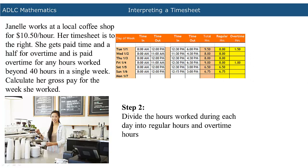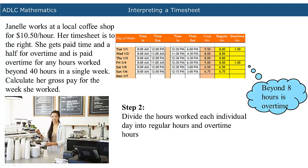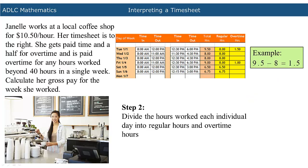The next step is to divide the number of hours worked during each day into regular hours and overtime hours. Remember that anything beyond 8 hours is considered overtime. For example, on Tuesday, Janelle worked 9.5 hours. When you subtract 8 regular hours from the total 9.5 hours, you are left with 1.5 hours overtime.